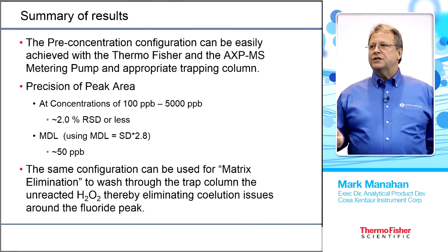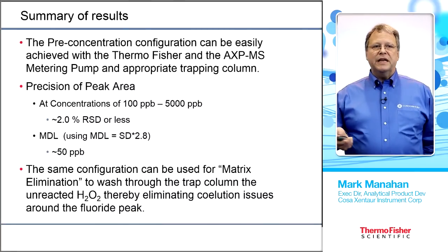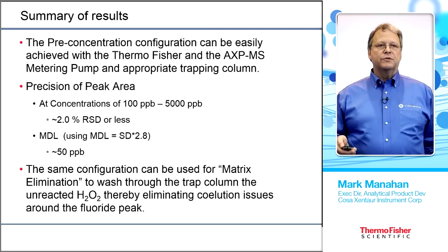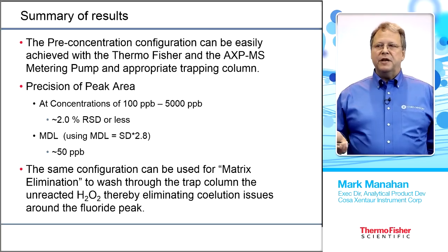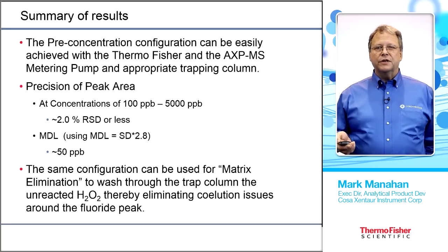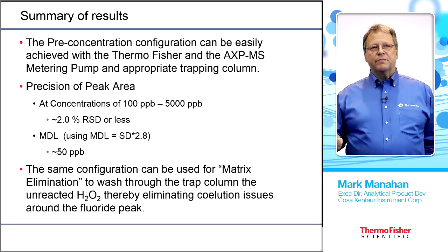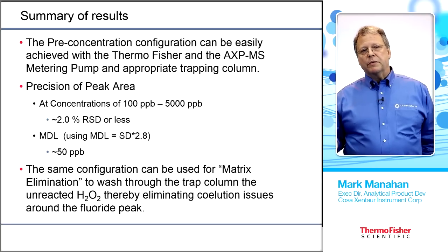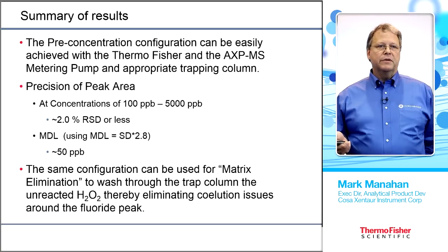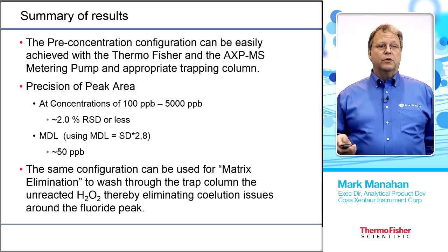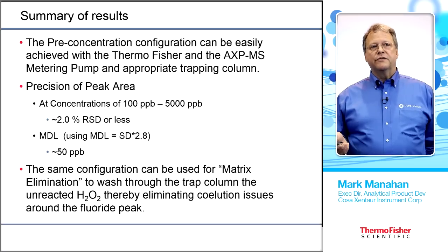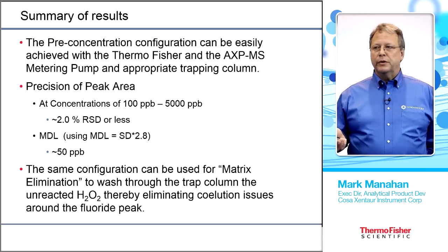In summary, pre-concentration can be easily configured onto existing or new systems. At concentrations of 100 to 500 ppb, the RSD is roughly 2% or less. Based on data generated so far, the minimum detection limit is expected to be around 50 ppb for the sample. The same system will also remove peroxide interference on the fluoride peak when sulfur measurement requires peroxide.